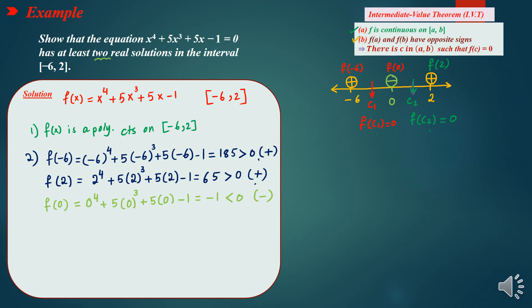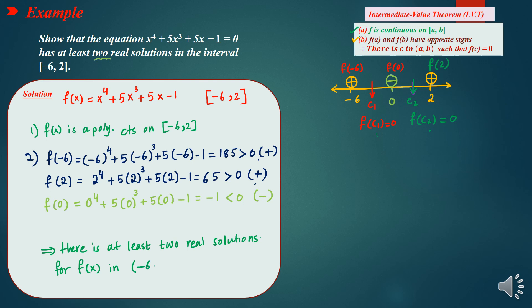This means there are at least two solutions in the open interval from negative 6 to 2. The conclusion is: there are at least two real solutions for the given equation in the interval from negative 6 to 2. And that's it — thank you.